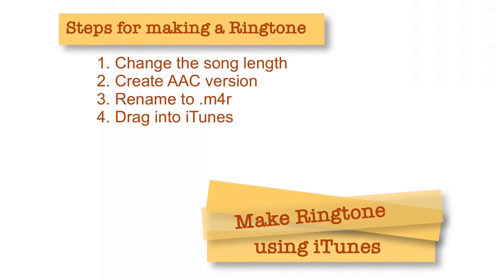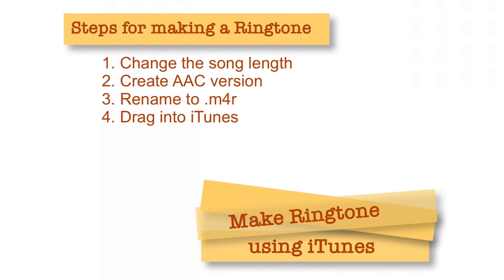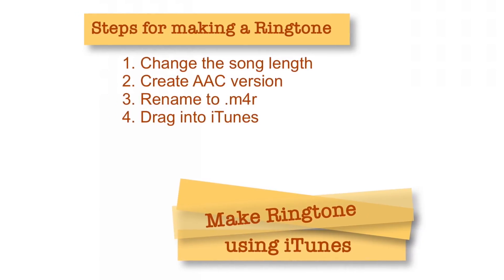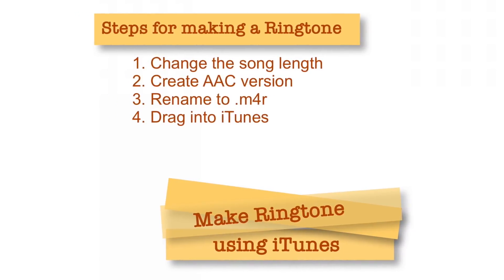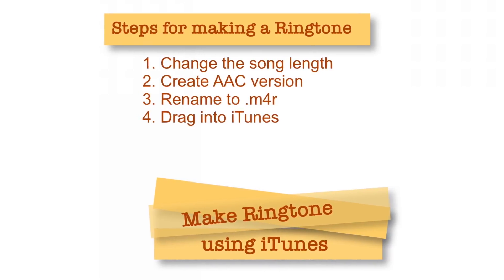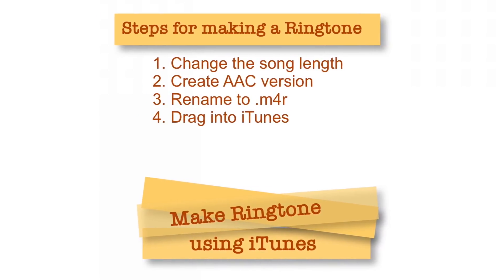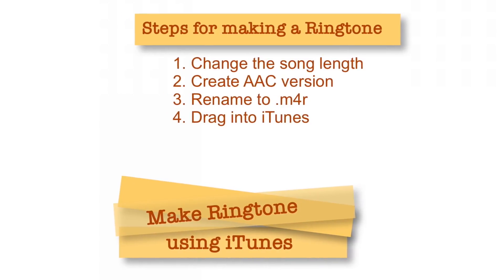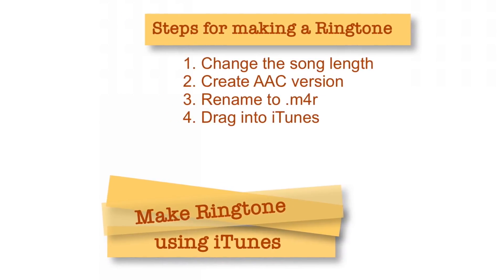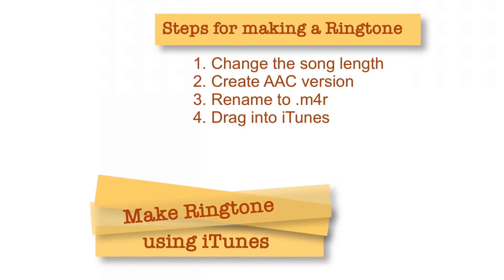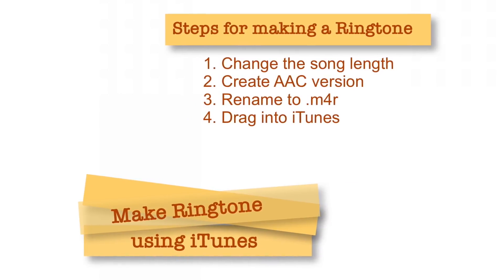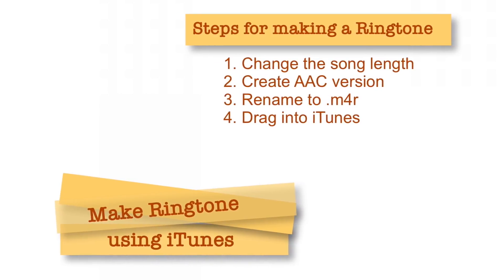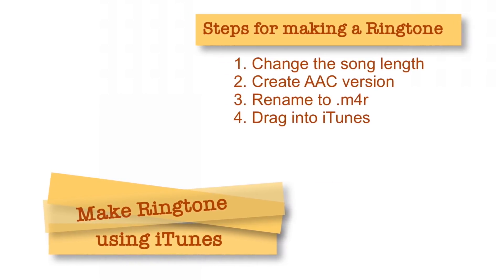Hello friends! Welcome back to Apple Friendly. This is video number 21 and today I am going to show you how you can make ringtones using the latest version of iTunes. We will change the song length, then create the AAC version, drag that file to the desktop, rename it to .m4r, and then drag that file back into iTunes. This procedure is applicable to both Windows PCs and Mac. If you like the video, do not forget to subscribe. Let's begin!